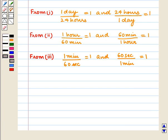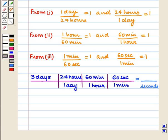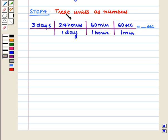We choose those conversion factors so that all linking units and initial units cancel out and we are left with the desired unit, seconds. We first convert days into hours using the conversion factor 24 hours upon 1 day, then convert hours into minutes using 60 minutes upon 1 hour, and lastly convert minutes into seconds using 60 seconds upon 1 minute.